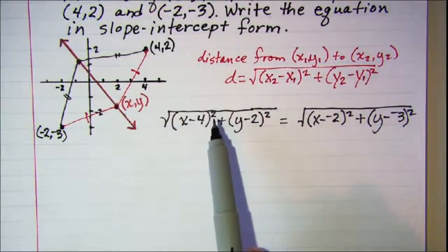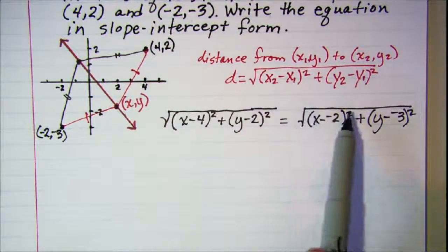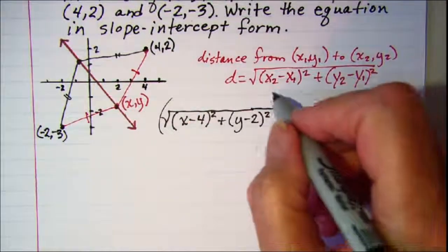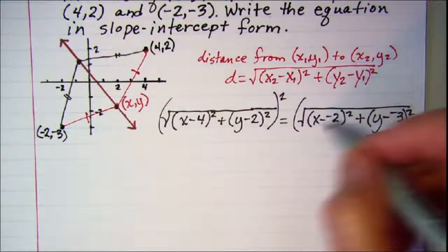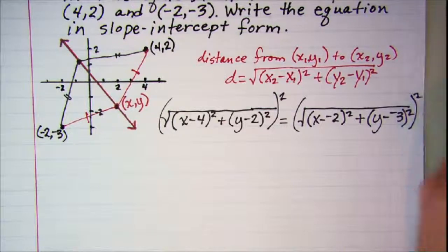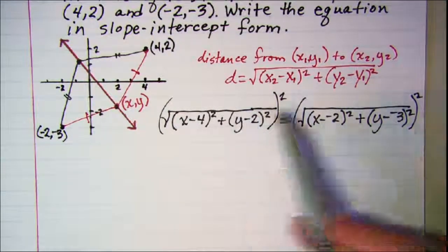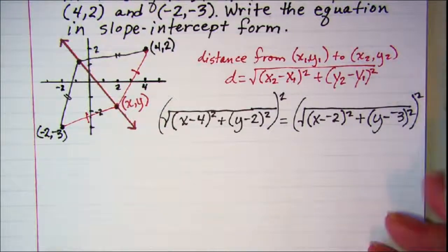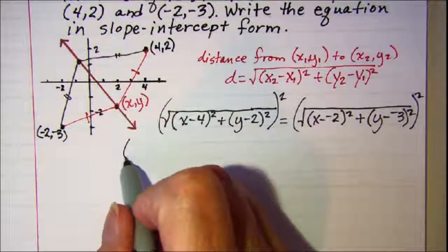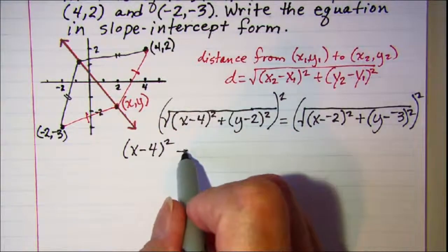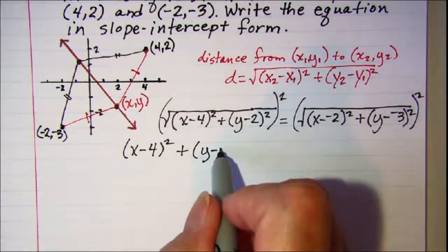Now the first thing I would do is get rid of these radicals. And I can do that by squaring both sides. So this square takes off this square root and this square takes off this square root.